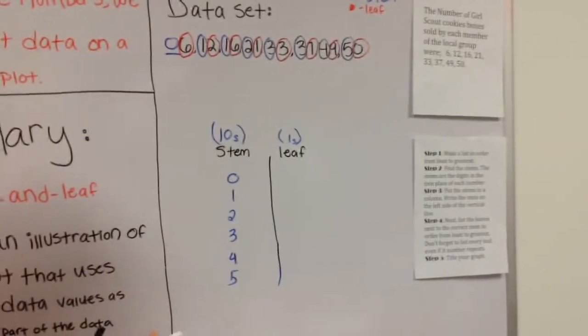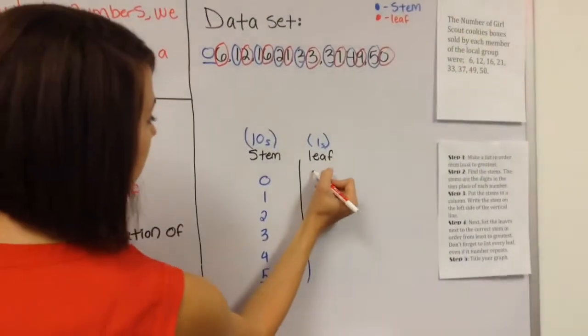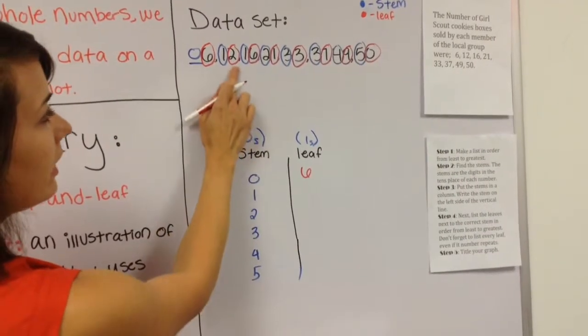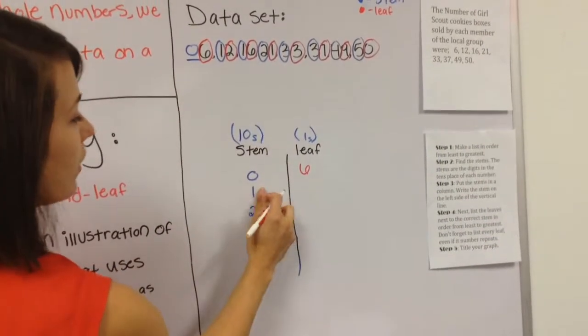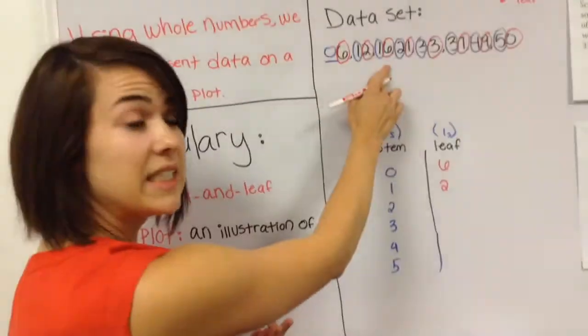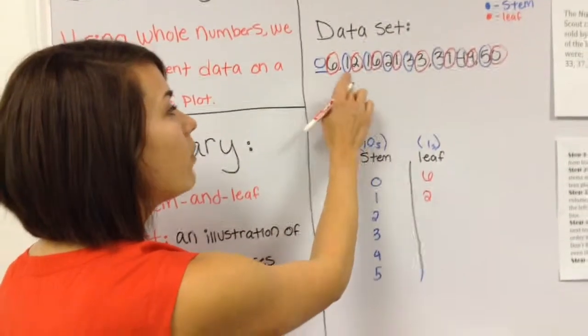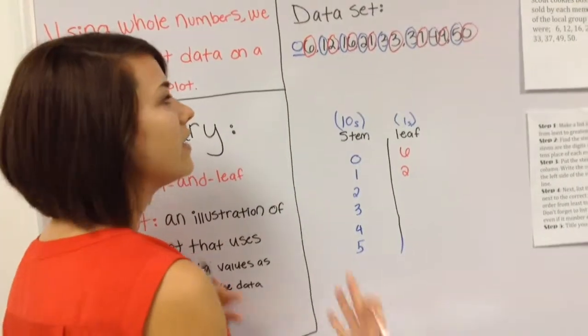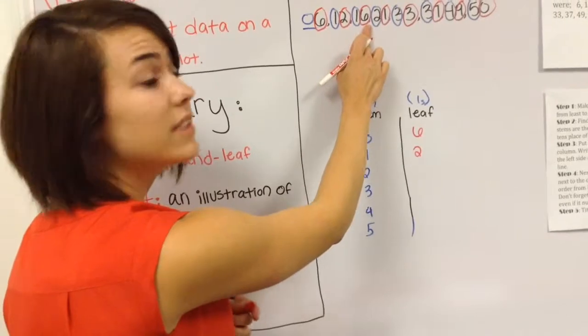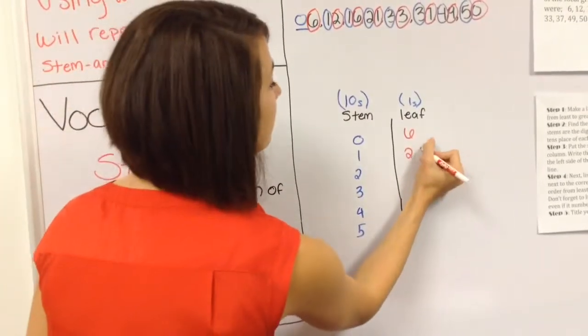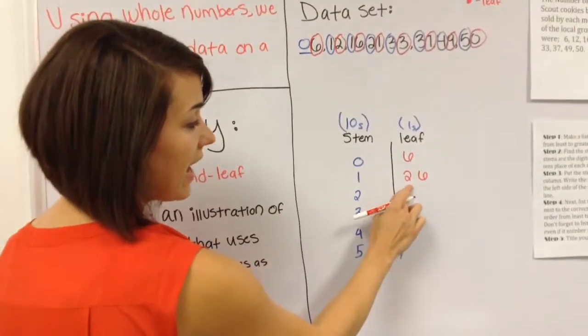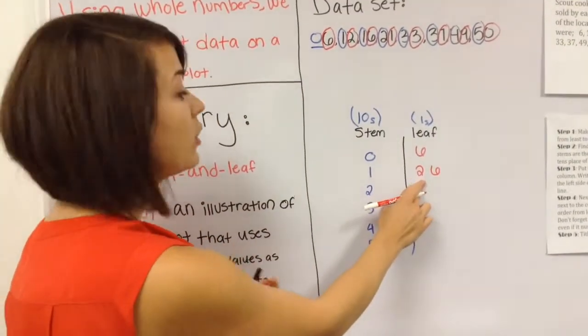So right here, I have a six, and that corresponds with my zero in the tens place. Right here, I have the number 12. That corresponds with my one and makes the number 12. And like right here, I have the number 16. So since I already have the ones in the tens place, it's repeating. I don't have that repeating right here, but I still need to represent this value in the ones place over here next to my leaf. And look how I went. I went from two to six. I wouldn't put six here and two here. I'd have to list them from least to greatest.